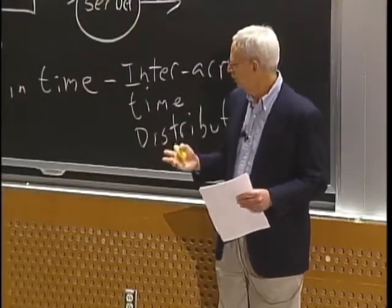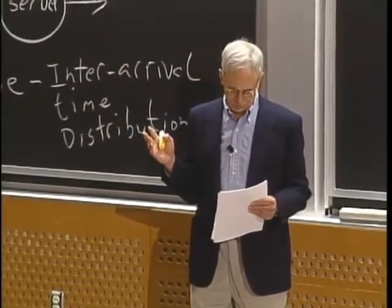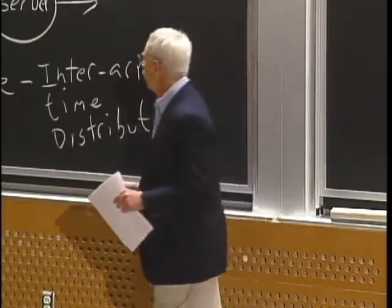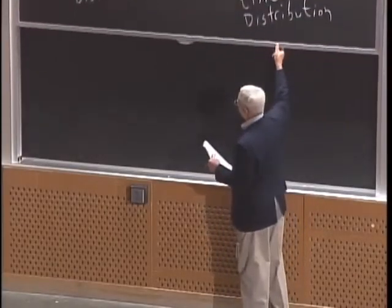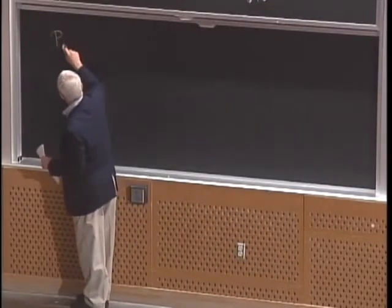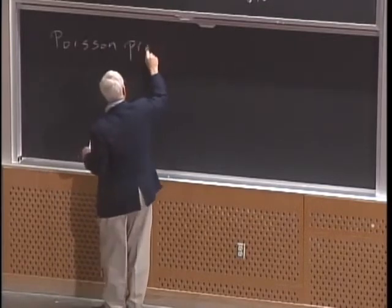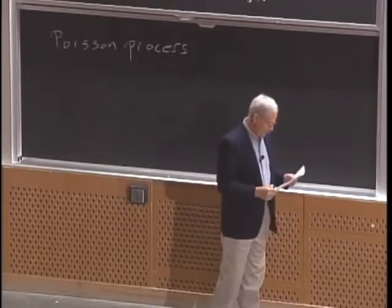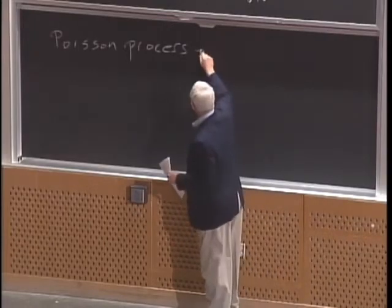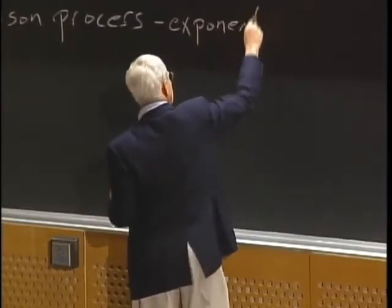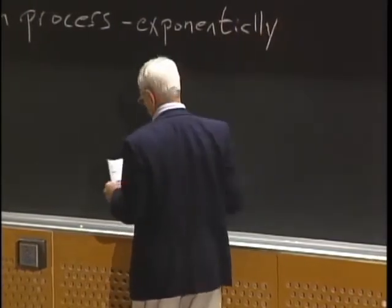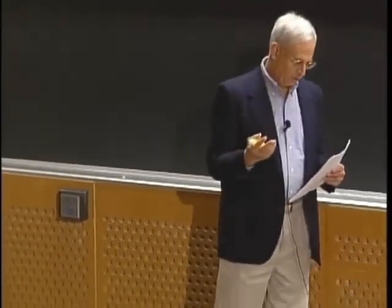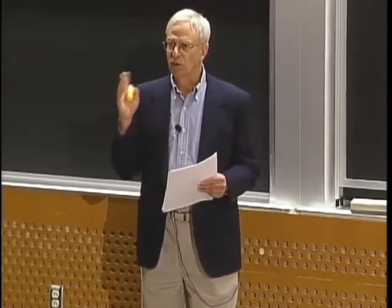The simplest process is where things arrive at regular, constant intervals — we hardly ever see this in the real world. Most of the time we see something that looks much like our old friend the Poisson process: things arrive at a random interval, but they are typically exponentially distributed. It is memoryless, and described by a single parameter — the average arrival rate.